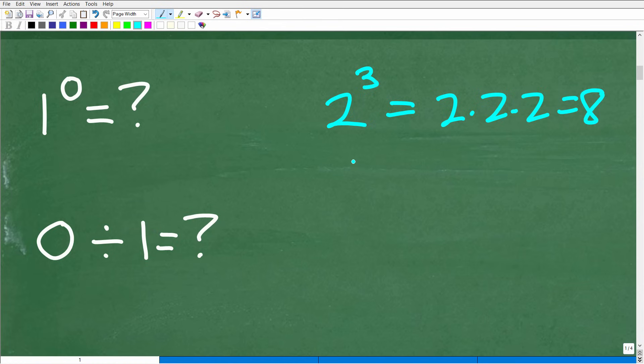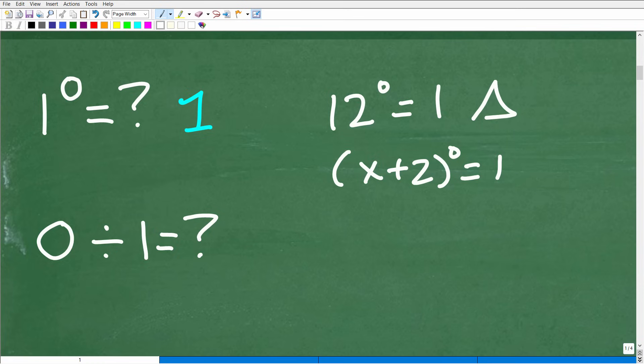In this particular problem, we're trying to figure out 1 to the zero power. So conceptually, 1 to the zero power, take 1 and multiply it by itself zero times. I mean, the thing doesn't even make sense, right? The question is kind of weird. But the answer is always 1. Anything to the zero power, any value, any expression to the zero power is 1. So, for example, 12 to the zero power is 1. X plus 2 to the zero power is 1. It doesn't make a difference. Triangle to the zero power is 1, right? So anything to the zero power is 1. Pretty straightforward.